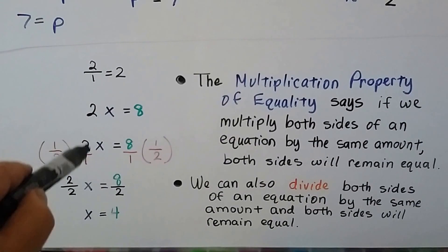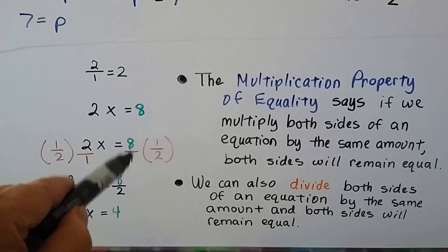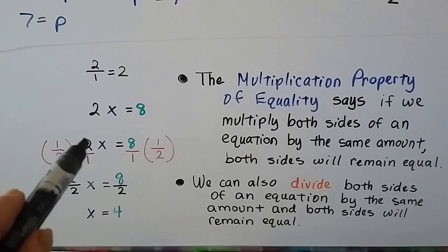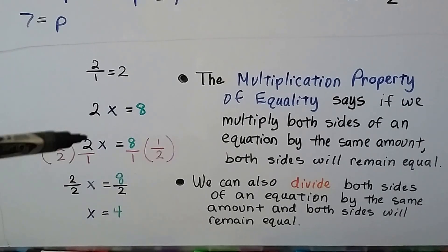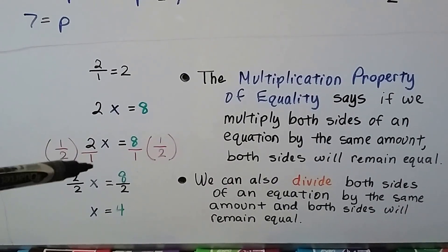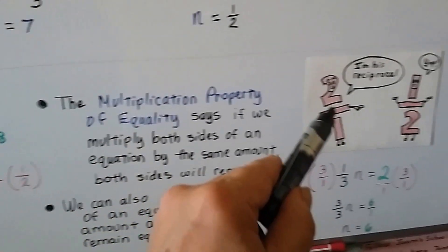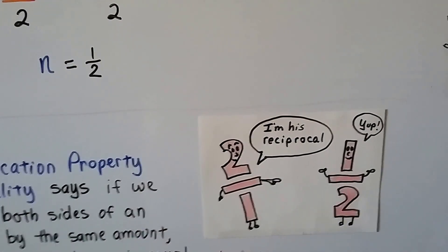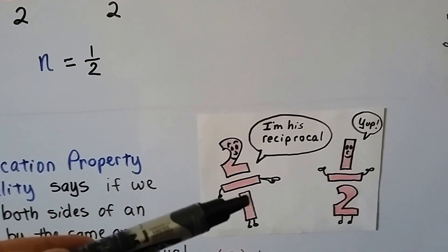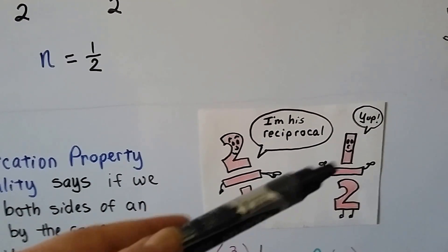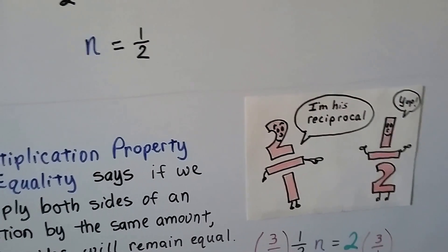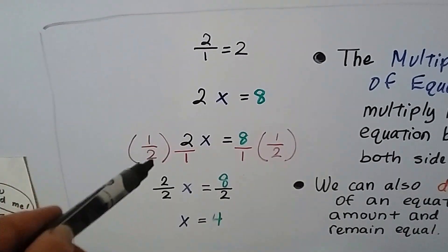So instead of 2, we're going to write it as a 2 over 1. We're going to write our 8 as an 8 over 1. And we're going to multiply both sides of the equation by the same amount. That amount is going to be this coefficient flipped around as its reciprocal. The reciprocal is just a flipped around version of a fraction. 2 over 1 is the reciprocal of a half, and a half is the reciprocal of 2 over 1. They just change numerator and denominators to get the reciprocal.